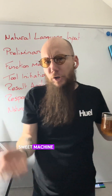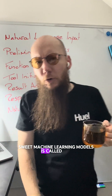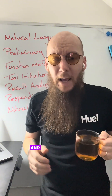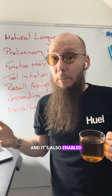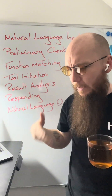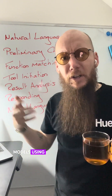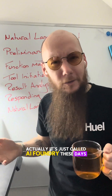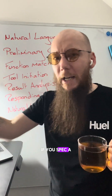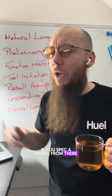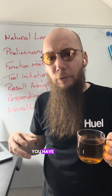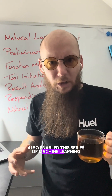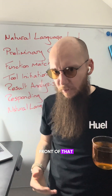This large suite of machine learning models is called the Azure AI Content Safety. And it's also enabled if you go ahead and build models using AI Foundry — that's what it's called these days, AI Foundry. If you spec a model from there, you have, by default, also enabled this series of machine learning models in front of that.